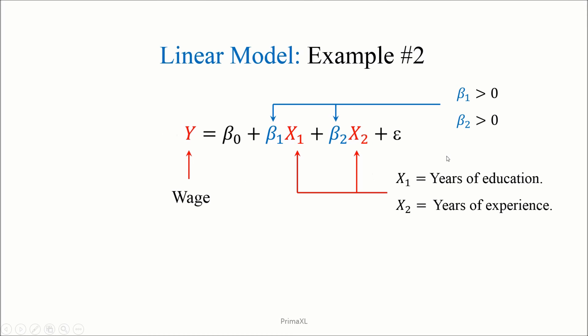Finally, the beta 2 would be another positive number. Finally, the beta 0 can be interpreted as the baseline wage when there is no education and experience.